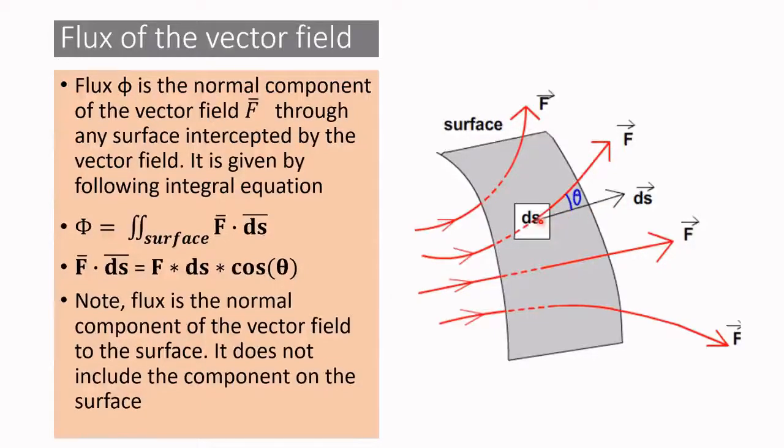Here we are considering flux to be the normal component of the vector field to the surface. It does not include the component on the surface.